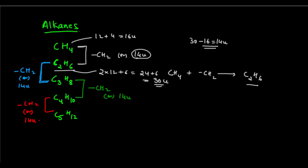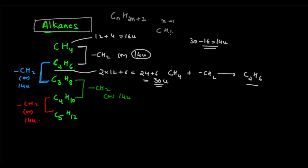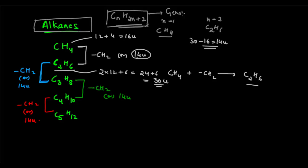So in this alkane series, between two progressive compounds there is always a difference of one CH2 unit and 14U of mass. This alkane series has a general formula: CnH2n+2. If you substitute the value of N, you get a particular hydrocarbon. For N=1, you get CH4; for N=2, you get C2H6, and so on.